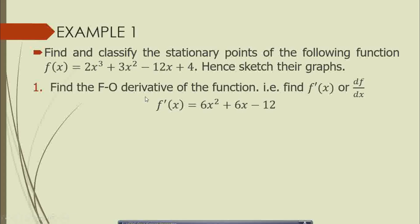To get this derivative, we differentiate the function term by term. For the first term, we drop the power 3 and multiply by 2, giving 6, then subtract 1 from the power to get 6x². For the second term, we drop the power 2 and multiply by 3 to get 6, remaining with 6x. For the -12x term, the power of x is 1, so we drop it to multiply 12, subtract 1 from the power leaving 0, so x disappears and we remain with -12. The derivative of the constant 4 is 0.